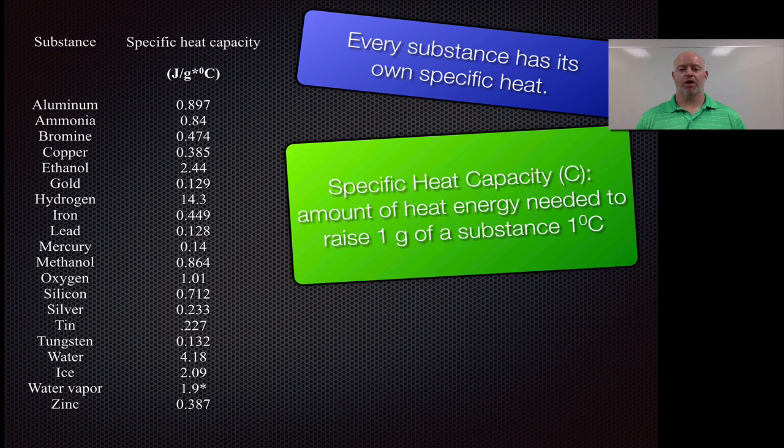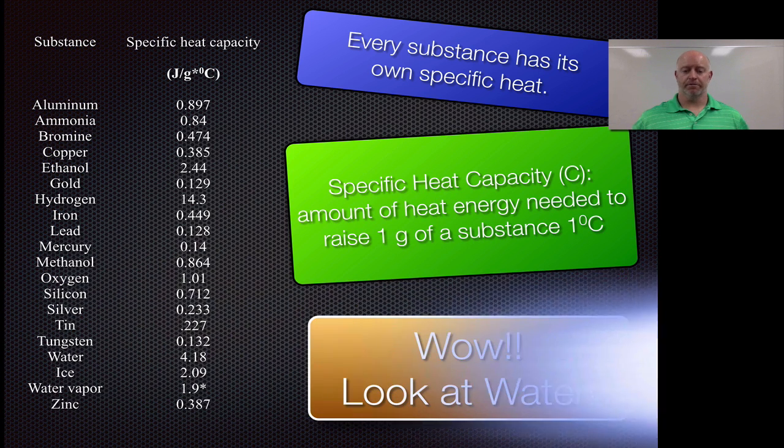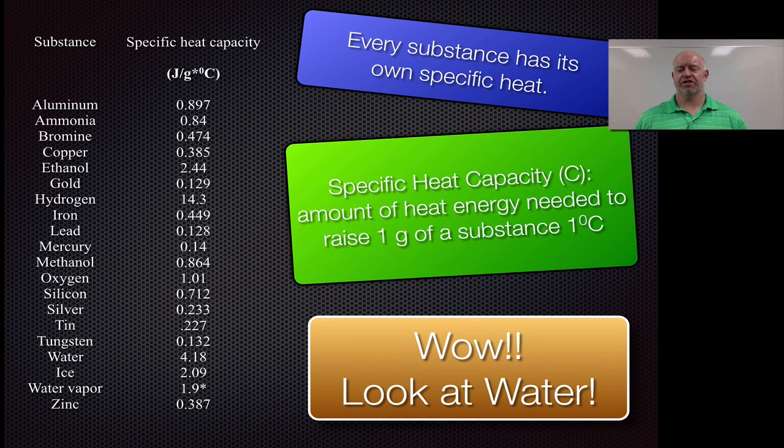One thing we want to make a note of is that every substance has its own specific heat capacity, and if you want to define the word specific heat capacity, we're talking about the energy it needs to raise one gram of the substance one degree Celsius. So it's kind of like our standard. So if we say, if I have one gram of water and I want it to go up one degree Celsius, how much energy is that going to take? Well, it's going to take 4.18 joules of energy to do that.